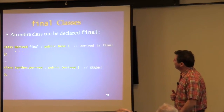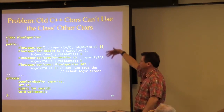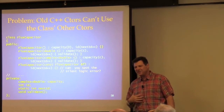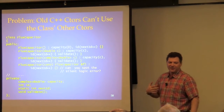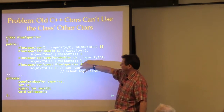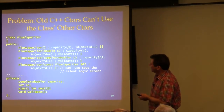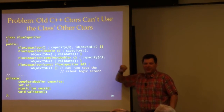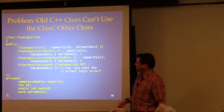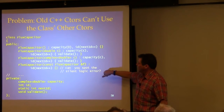In old C++, constructors could not leverage other constructors of the same class. In C++11, a constructor can call another constructor — delegating constructors. Here's an example with four different constructors for a FluxCapacitor class in old C++, where everyone duplicates effort. There's a logic error: the constructor that takes a double does not initialize capacity, leaving it with garbage. This kind of mistake can't easily be caught by the compiler.